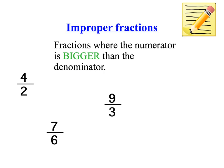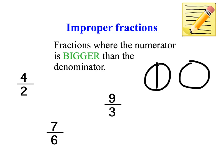Now an improper fraction, as the name suggests, is not proper. It's where the numerator is bigger than the denominator, so it actually equals more than one whole. When we're looking at 4 over 2, for example, we've got 4 halves. 2 out of 2 parts would be one whole number, but we've got 4 parts out of 2, so that means it actually equals 2 wholes.